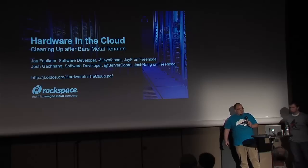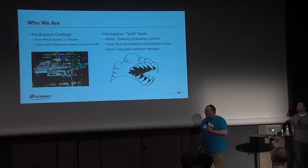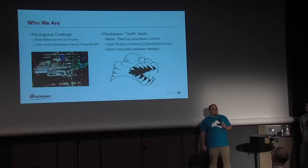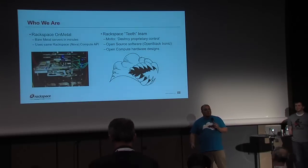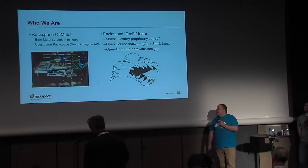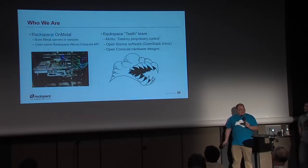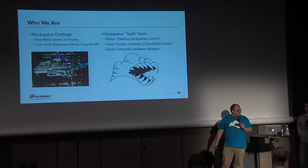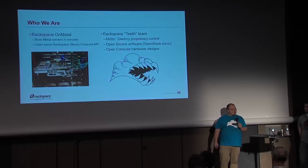So first of all, who are we? We're the Rackspace Teeth team. Our team motto is to destroy proprietary control of the data center. For us, that means using open software and open hardware wherever possible to commoditize the data center. All the hardware we're going to be talking about today is open compute hardware designs, and all the software that runs this, in so much as we can, is completely open source.